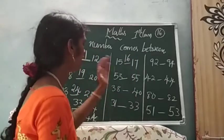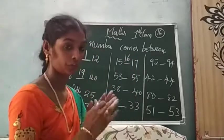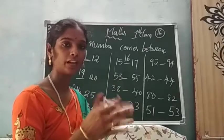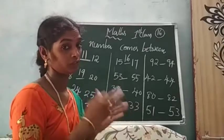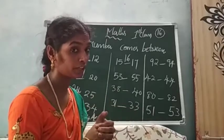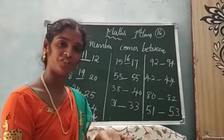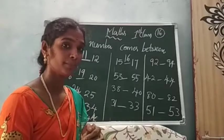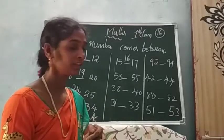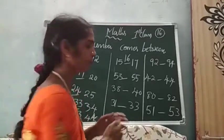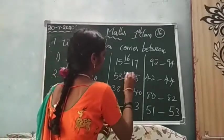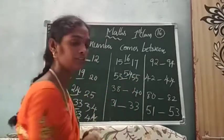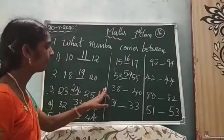I will write here. After that 53 dash 55. 53 after number? 55 before the number — which number, children? Please tell me. 54. 54. Good. In this problem: